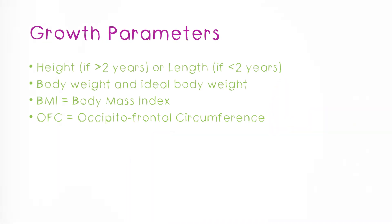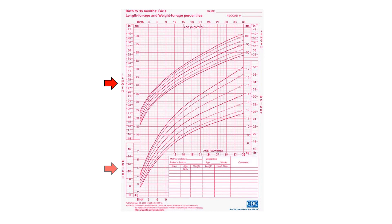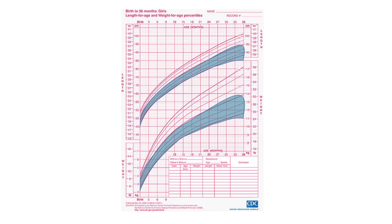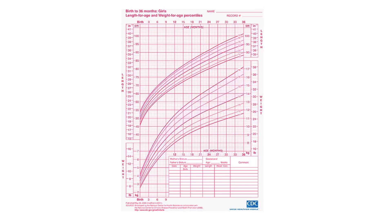All these values need to be plotted in graphs. You can see here a graph with length, weight, and age. Note that there are different graphs for different age groups. We plot the height and weight and look at which percentile the baby belongs to. A percentile is the range a child falls into compared to a normal population. The 50th centile is the normal weight or length for an average child of that age. There are also charts for OFC and BMI. You can find more about these graphs in my upcoming videos.